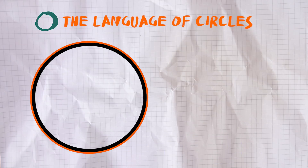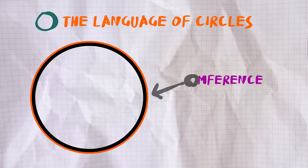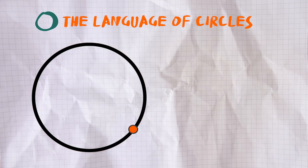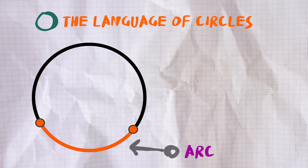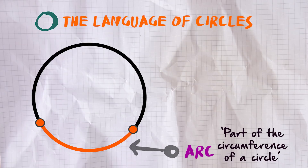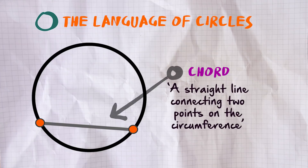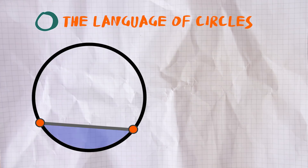Right, the language of circles. So that orange line there highlighted is the circumference of a circle — it's just the distance around the circle. An arc is just a part of the circumference of a circle. A chord is a straight line that connects two points on the circumference; it's just a straight line going across your circle.